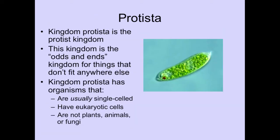Now we come to the hodgepodge kingdom — the Protista. The kingdom Protista is the odds and ends kingdom. As Julia pointed out in class, this is the factionless kingdom. This kingdom has organisms that are usually unicellular but do have eukaryotic cells. Pretty much, they are just not a plant, animal, or fungus — but they do have eukaryotic cells, so if they do not fit into the other three groups, we put them into the Protista kingdom.